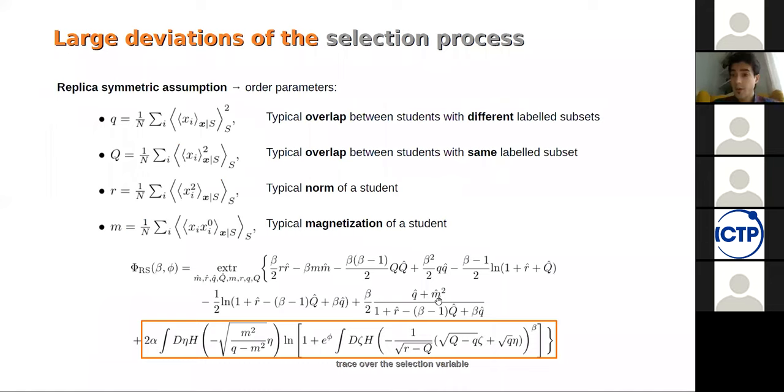When you do the replica calculation, even though we did it in replica symmetric assumption, since it is basically a two level problem, the replica calculation really looks like a 1RSB calculation. You will have two overlaps between students. The first one will be between students with the same choice of labeled subset, and the other one will be with different choices. And then of course we will have a norm for the students in a typical magnetization, which is the important parameter for the generalization. It gives you the overlap between the teacher and the student. The expression you get in the end really looks like the 1RSB expression for the perceptron.